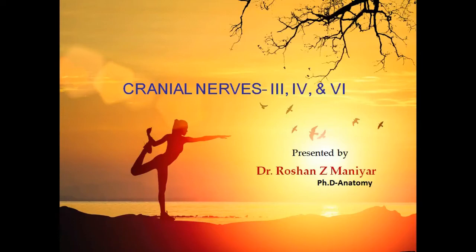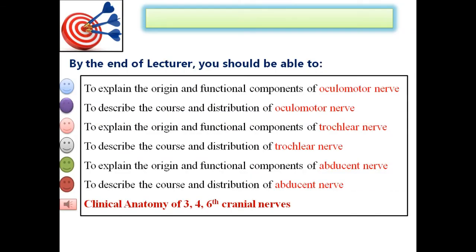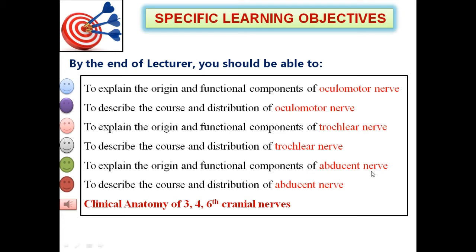Hello everyone, welcome to my class. Today I am going to discuss about the three cranial nerves of the brainstem. The specific objectives of today's topic include the functional components of the oculomotor nerve, trochlear nerve, abducent nerve, and the course and distribution of these three cranial nerves, as well as their clinical anatomy.